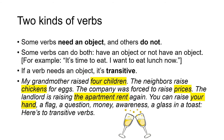Two kinds of verbs. Some verbs need an object and others do not. Some verbs can do both — have an object or not have an object. For example: it's going to eat. I want to eat lunch now. If a verb needs an object, it's transitive.